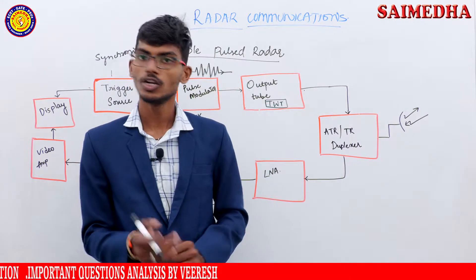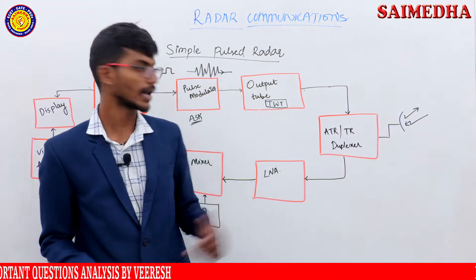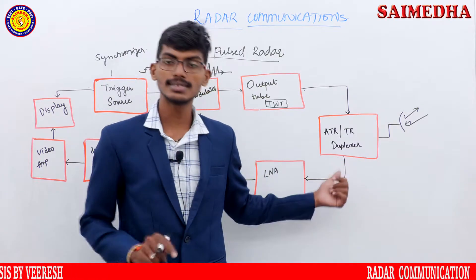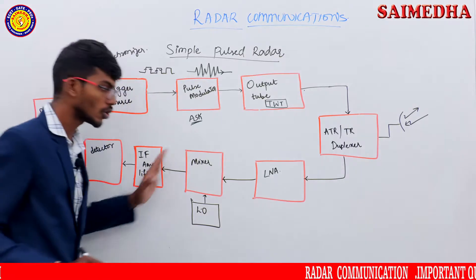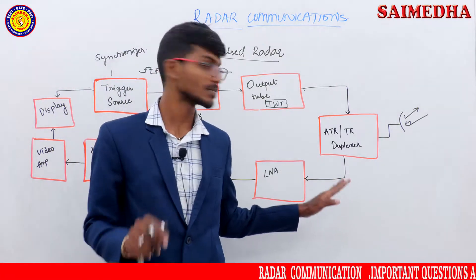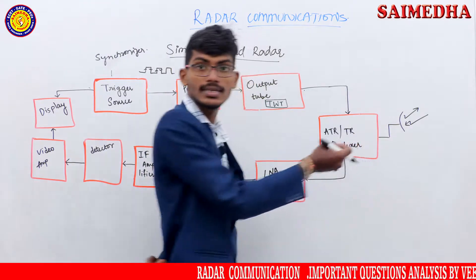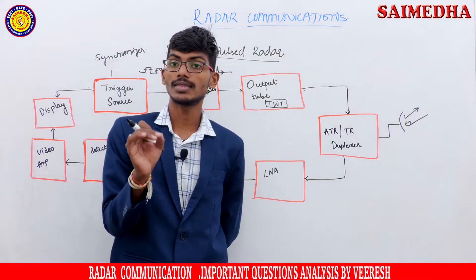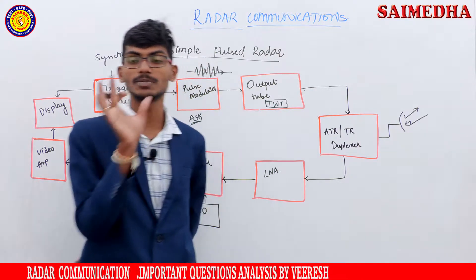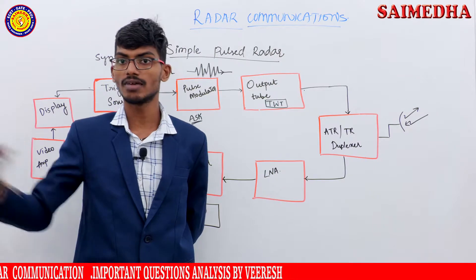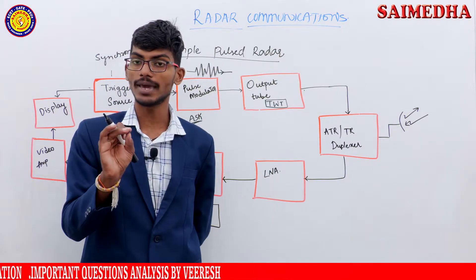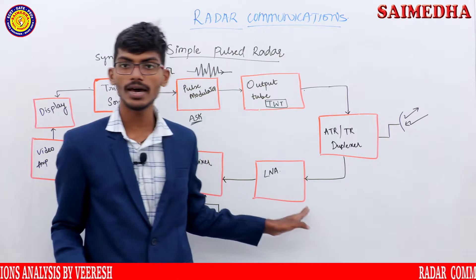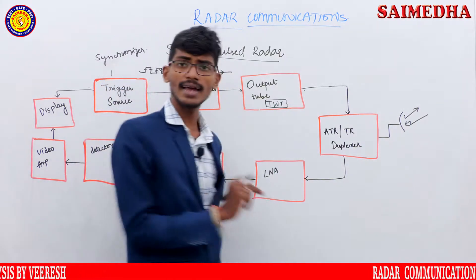The TWT amplifier signal is then routed to the duplexer. What does the duplexer do? The duplexer connects the transmitter and receiver alternatively. It acts as a single antenna — a transceiver. The power consumed in the basic radar is maximum at the transmitter, so the duplexer is going to prevent the receiver from the high power of the transmitter signal. The duplexer also acts as a single antenna for both transmitting and receiving.